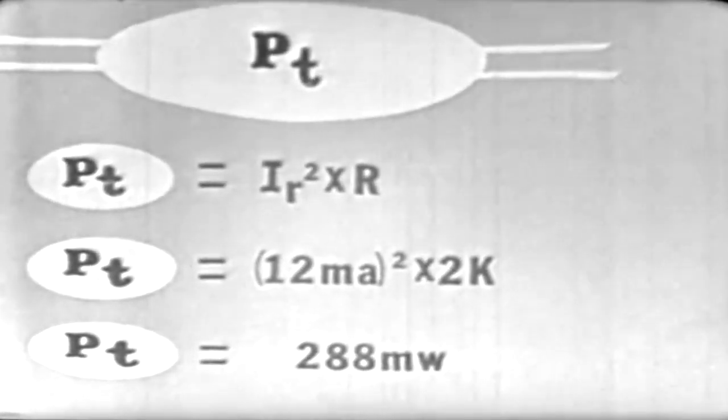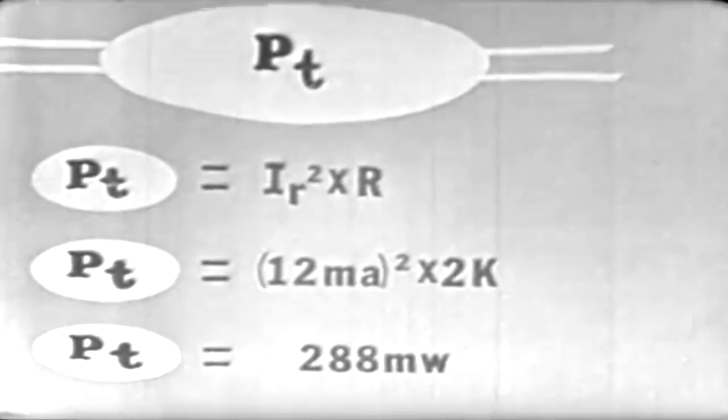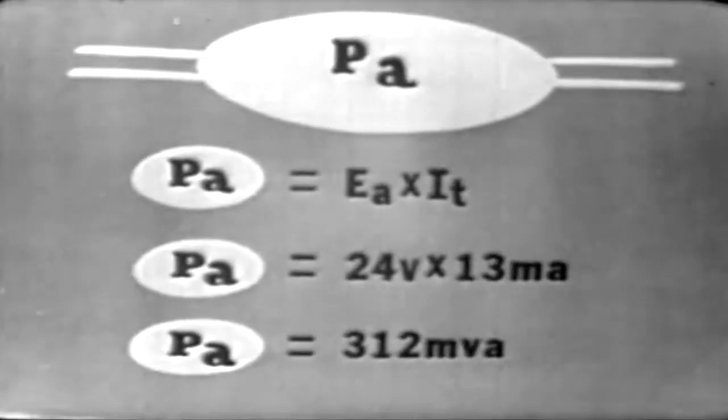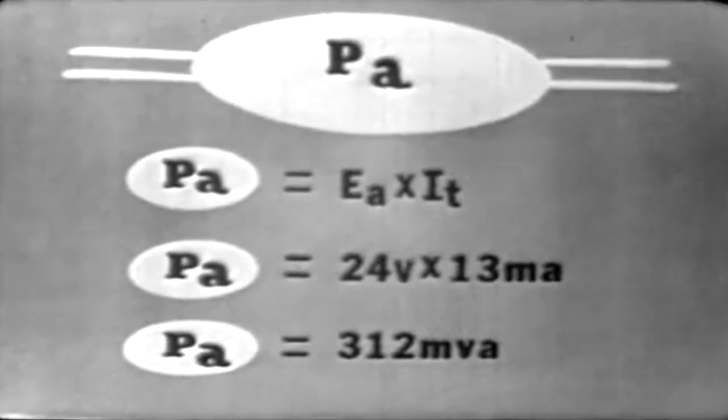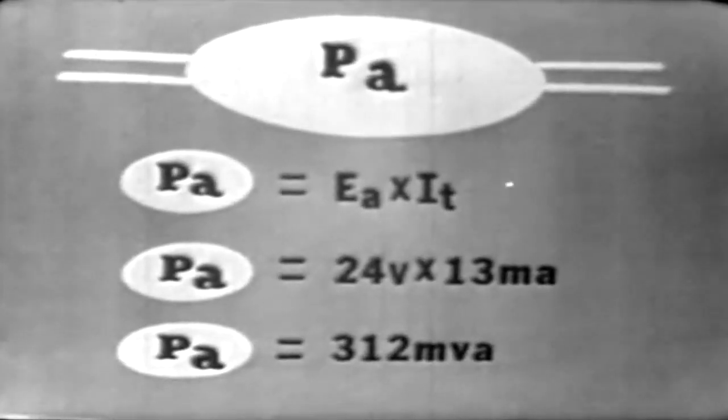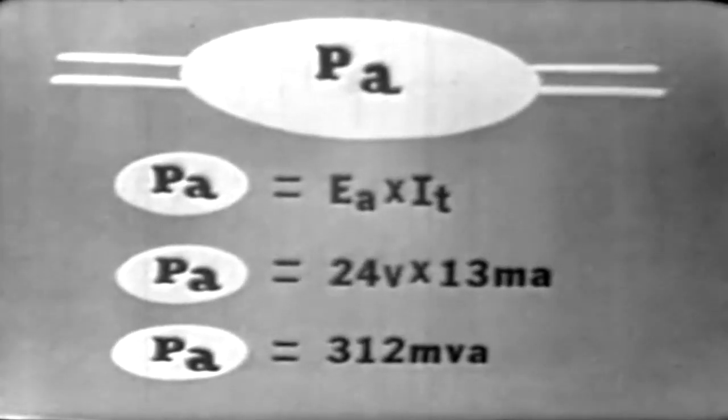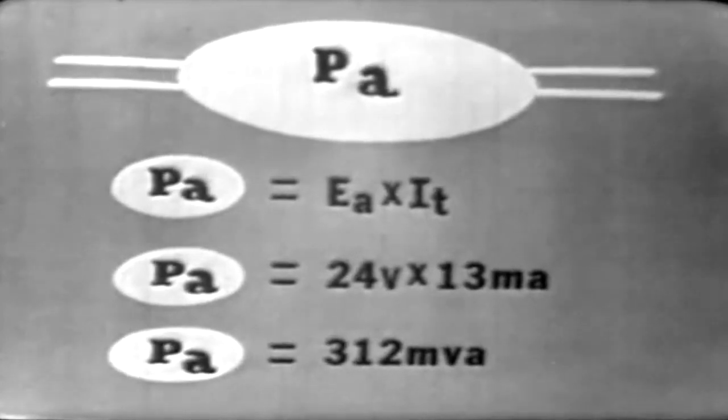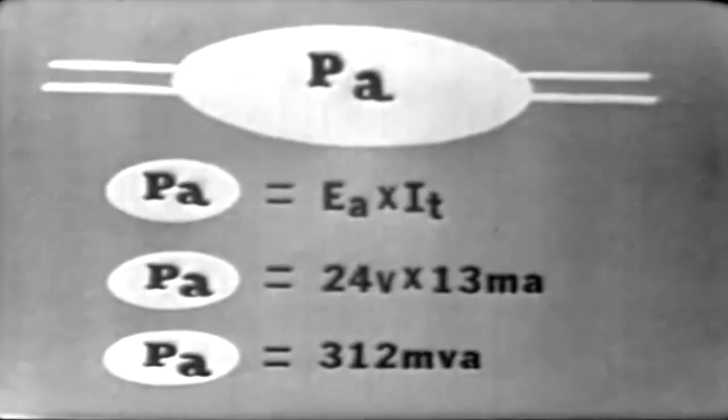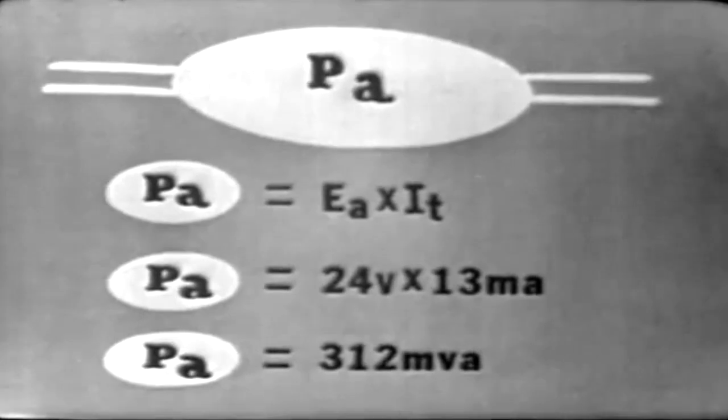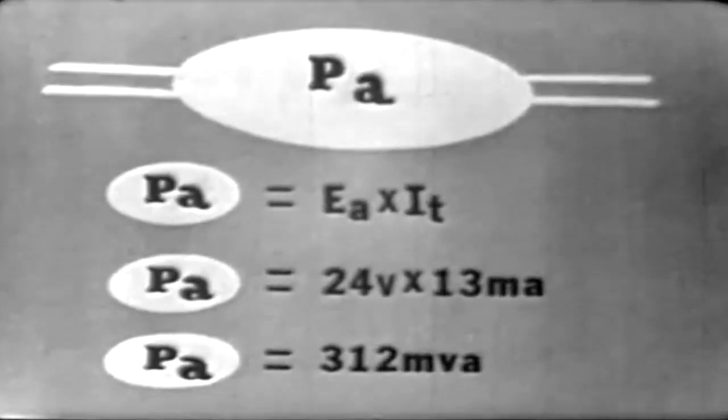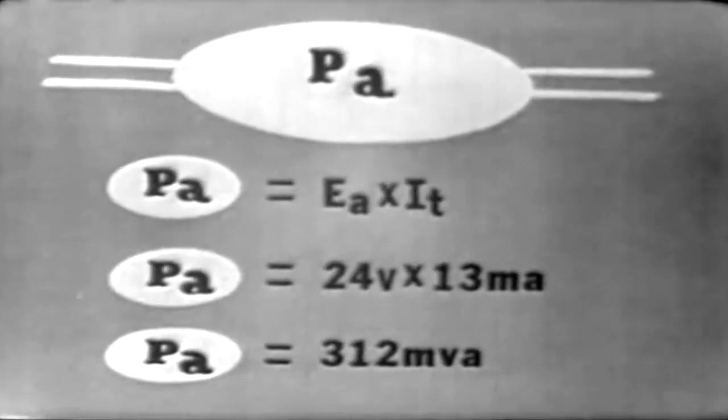Now, as in any reactive circuit, we also have another power, and that is the apparent power, PA. That is equal to the applied voltage times the total current. Substituting into this formula, we have 312 millivolt amperes of apparent power. Recall, apparent power is the power delivered to the circuit by the generator.